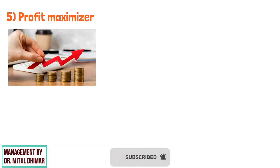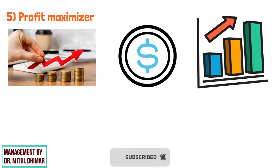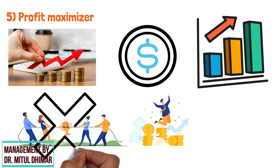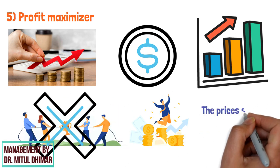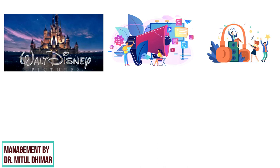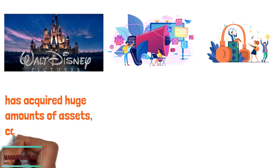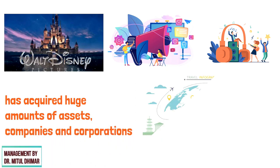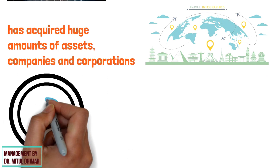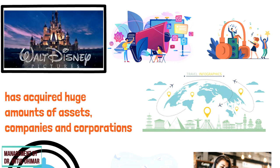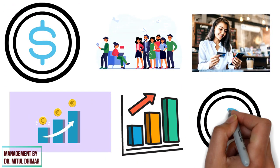Profit Maximizer: in a monopolistic market, the company maximizes profits. It can set prices higher than they would have been in a competitive market and earn higher profits. Due to the absence of competition, the prices set by the monopoly will be the market price. The Walt Disney Company is one of the largest mass media and entertainment conglomerates in the world and has acquired a huge amount of assets, companies, and corporations, both national and international. Whatever price it demands, its customers are ready to pay, and the Walt Disney Company can maximize its profit by setting higher prices.